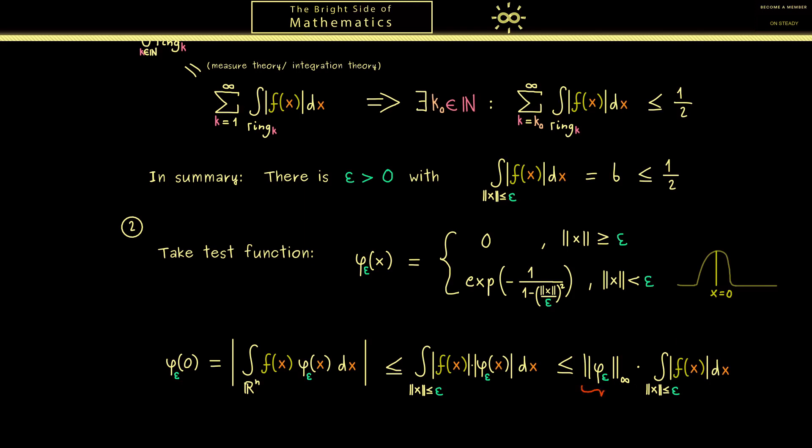First let's pull out the supremum norm of the test function. And then you see only this integral here remains. First the supremum here we already know it's the value at 0. More concretely the same as the left hand side. And the second part here is equal to b. However b was smaller than 1 half.